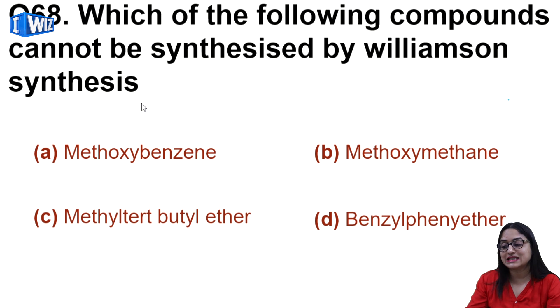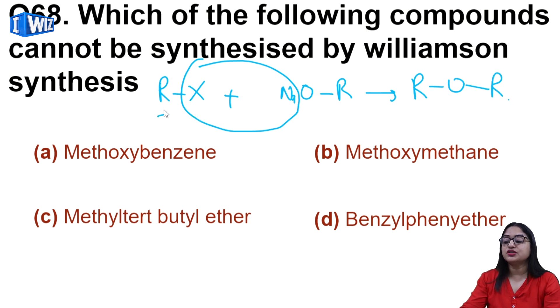Next question is which of the following compounds cannot be synthesized by Williamson synthesis? Whenever you perform Williamson synthesis, you have alkyl halide and sodium alkoxide. You remove NaX and you get ether. But this alkyl halide should always be primary, only then will you get ether, otherwise not. This condition is not possible in C option because here you have tertiary butyl ether forming, and on one side methyl group, and here you have high degree compounds on both sides. Therefore C cannot be prepared using Williamson synthesis.